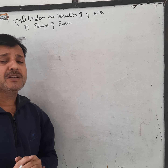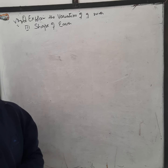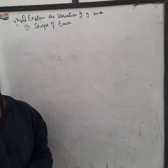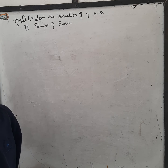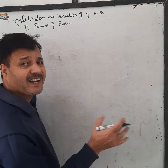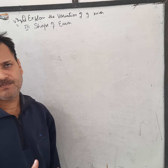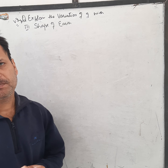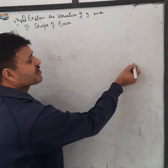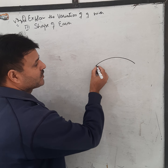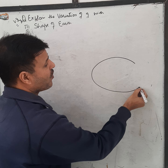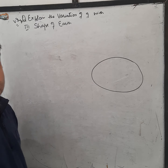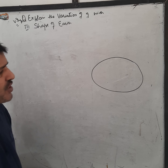What difference does the shape of earth make? What effect does it have on the value of g? As we know, earth is not perfectly spherical in shape — it is oblate shaped, not perfectly spherical.